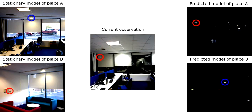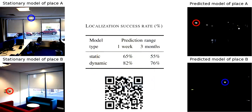We tested the localisation performance of the approach twice — one week and then again three months after learning of the dynamic model. Compared to localisation based on stationary features, our spectral map-based localisation performs significantly better at various conditions.